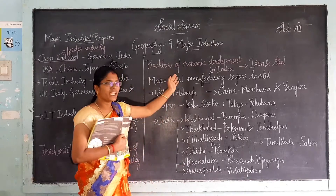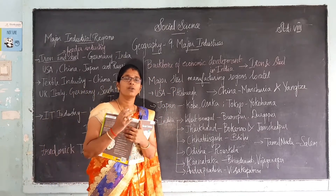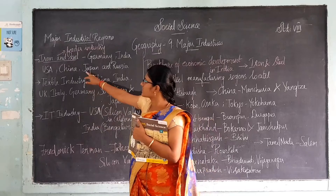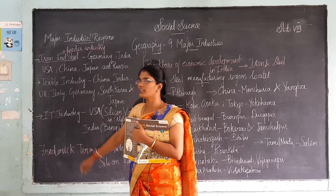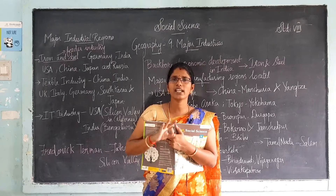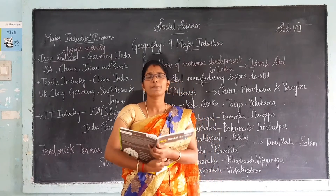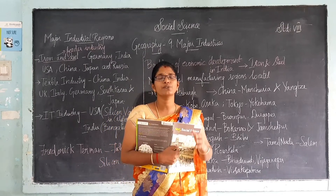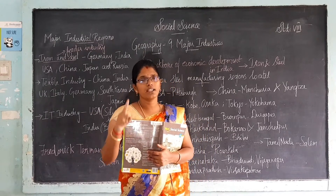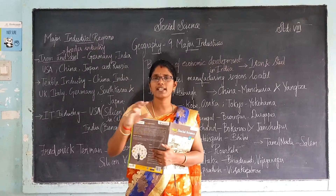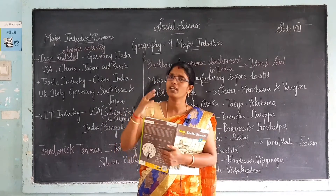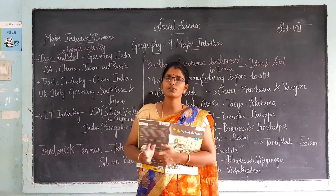In this chapter we are going to see major industries all over the world. Three major industries we are going to study: one is iron and steel industry, the second is textile industry, and the third is IT industry — information technology. We are also going to see which are the major producers of each and compare specific regions with India.